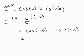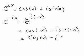Using the even-odd properties of cosine, cosine of negative x is just cosine x. Sine of negative x is minus sine x.